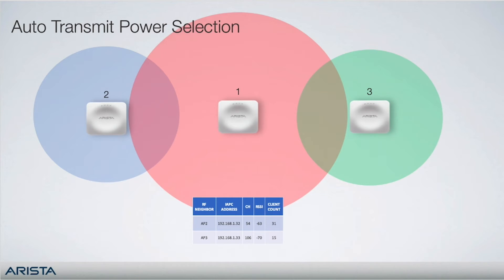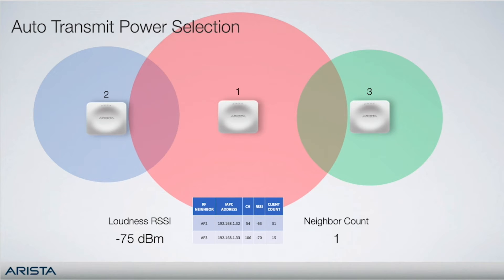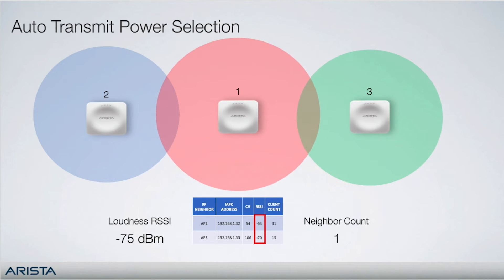The two configuration parameters involved here are the loudness RSSI, which is by default -75 dBm, and the neighbor count, which is by default 3. If the loudness RSSI is exceeded for more neighbors than the neighbor count, then the transmit power is reduced. For dense deployments, the neighbor count is typically configured higher than the default value of 3.